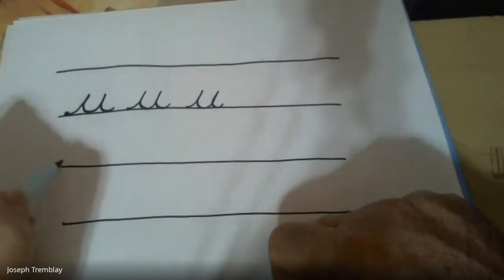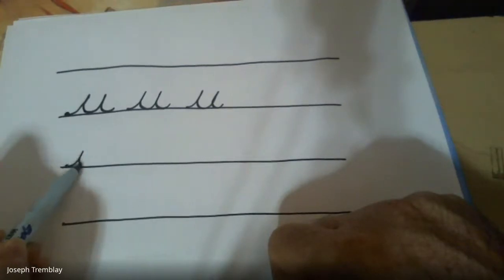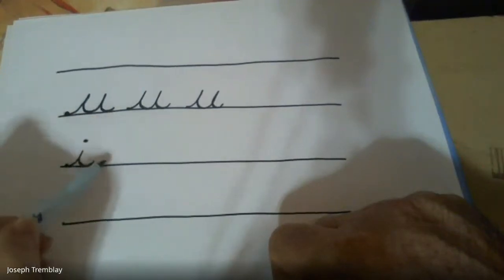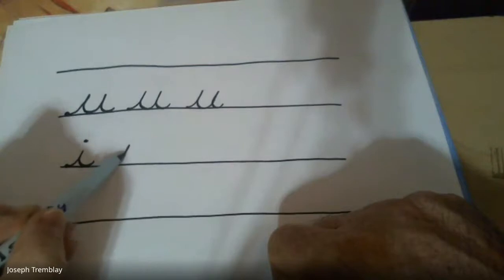We'll make the letter I. We start on the ground, we go upstairs, downstairs, and out. Dot the I. Again, the letter I. Start on the ground, we go upstairs, downstairs, and out. Dot the I.